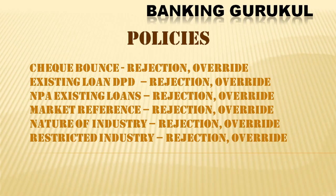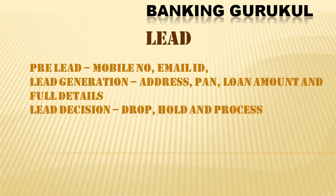Market references — when giving a loan to a person or business, you verify in the market; if positive or negative, you decide whether to override or reject. Nature of industry: some industries can be set to approve, some to override. Restricted industries — those restricted by government or court — can be directly rejected without wasting bank or customer time. All these should be included in policies.